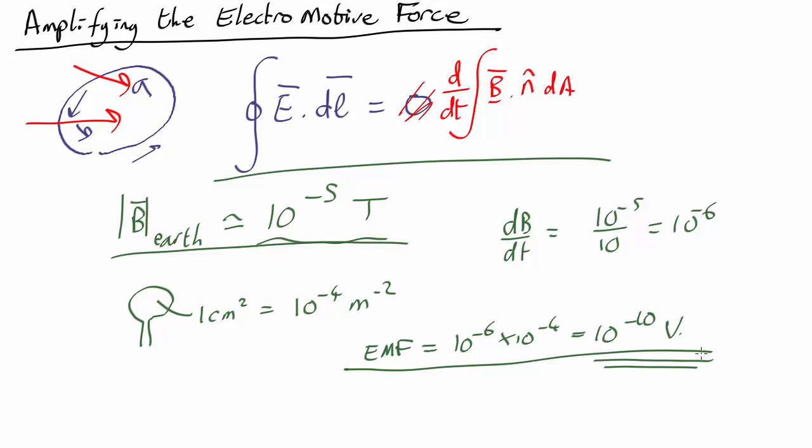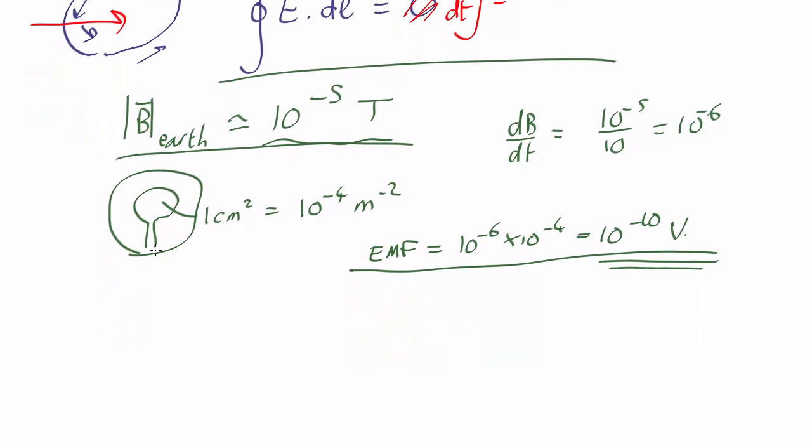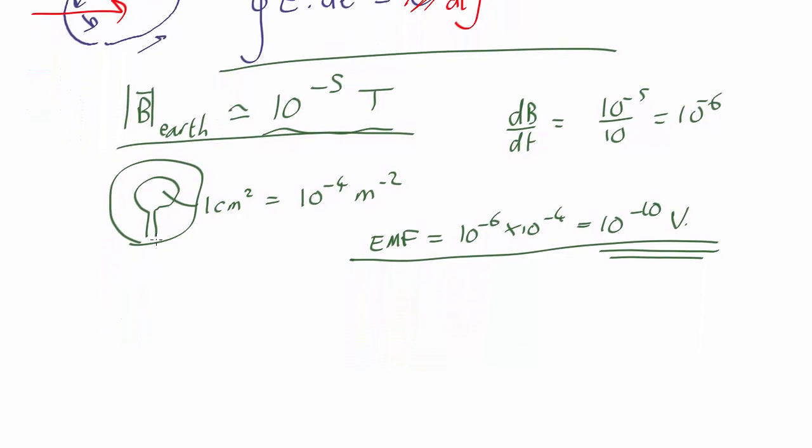One way is instead of using a single wire loop with the area of one square centimeter or whatever, we could have multiple loops. So let's say we have something that looks like this. What happens if you have a changing magnetic field going through this? Let's say you have n loops each with the same area A. Well, in this case, you can pretty much assume, because they're all close together and all the same size, that the magnetic flux through every one of them is the same. Therefore, the rate of change of the magnetic flux through any one of them is the same.